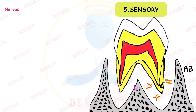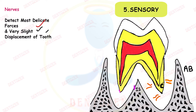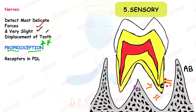The fifth function is sensory. Sensory receptors in the PDL can detect even the most delicate forces and the slightest displacement of the tooth. This type of sensation is called proprioception — sensations of touch and pressure are detected by receptors in the periodontal ligament. For example, if you place food on your tooth you can tell whether it is soft or hard because of these PDL receptors. If you bite on a nut and it will not chew, you feel pain — the PDL receptors signal you to stop to prevent injury.